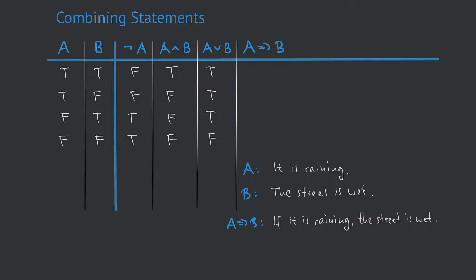We start with the first line. In this case, both A and B are true — meaning it is both raining and the street is wet. We ask ourselves if this is in line with our understanding of A implies B. Yes it is, because it's raining and the street is wet, so there is no violation against our implication. That means the logical value of A implies B will be true in this case.